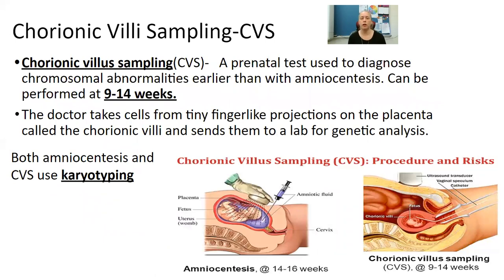There's also something called chorionic villi sampling, or CVS. This is a prenatal test used to diagnose chromosomal abnormalities earlier than with amniocentesis, and it can be performed at 9 to 14 weeks. The doctor takes cells from tiny finger-like projections on the placenta called the chorionic villi and sends them to a lab for genetic analysis. Both amniocentesis and CVS use karyotyping, which we'll get into in the next couple of days.